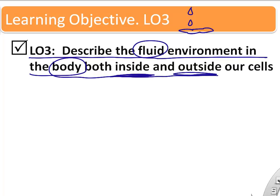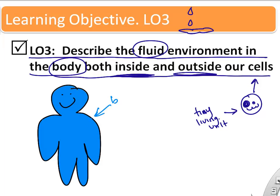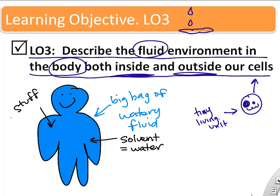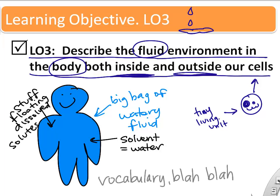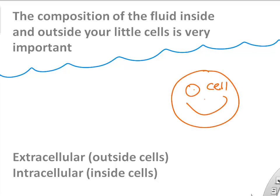The next learning objective covers fluid chemistry. The fluid found inside our cells and bathing our cells is water-based. You are a lot of water, and floating around in that watery fluid is a bunch of dissolved stuff. We consider water the solvent and all the dissolved stuff the solutes. You're mostly water with a bunch of dissolved solutes in it.